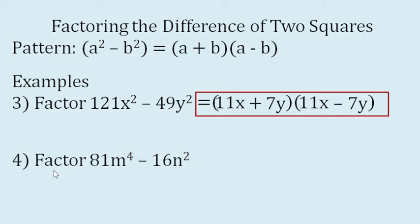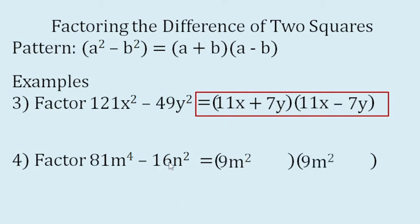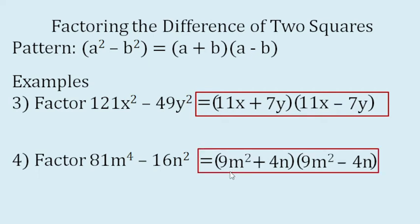Let's do example number four. Factor 81m to the power of 4 minus 16n squared. Again, there are two binomial factors. The square root of 81m to the power of 4 is 9m squared, and the square root of 16n squared is 4n. Then we will just place plus and minus signs. So these are the factors: the quantity 9m squared plus 4n times the quantity 9m squared minus 4n.